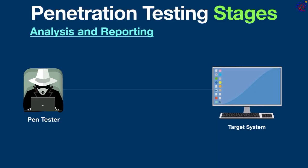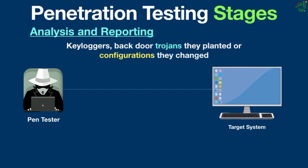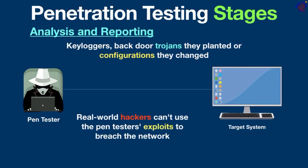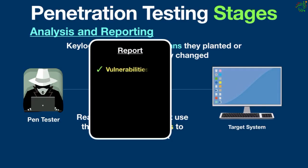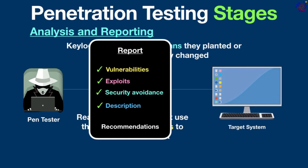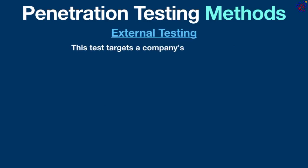The fifth and final stage is analysis and reporting. At the end of the simulated attack, pen testers clean up any traces they have left behind, such as keyloggers, backdoor trojans, or configurations they changed, so that real-world hackers cannot use the pen testers' exploits to breach the network. The pen testers then prepare a report outlining vulnerabilities found, exploits used, details on how they avoided security features, and descriptions of what they did while inside the system. The report may also include specific recommendations on vulnerability remediation, which the in-house security team can use to strengthen defenses.